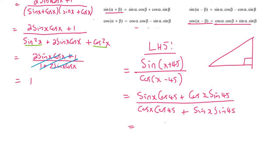If you look on your special triangles, both sin 45 and cos 45 are going to be 1 over square root 2. So I'm going to change this now to 1 over square root 2, or first I'll say sin x and then 1 over square root 2, then plus cos x times 1 over square root 2.